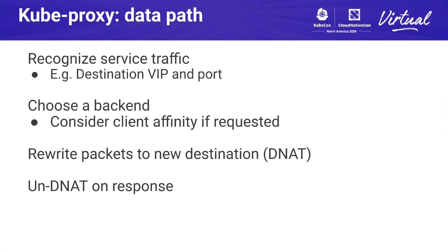On the data path, kube proxy has to recognize that service traffic exists — for example, your pod is sending traffic to a particular destination virtual IP and port. Then it applies load balancing: it's actually random, choosing a backend, and also implements service attributes such as client affinity. Finally, it uses network address translation to rewrite packets to go to a new destination, and of course it has to undo the address translation on the response.